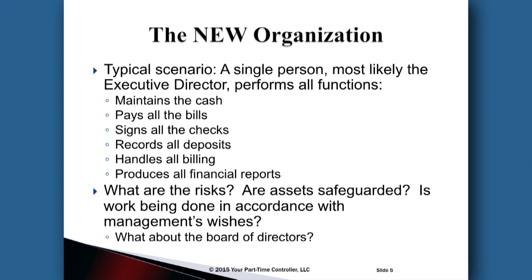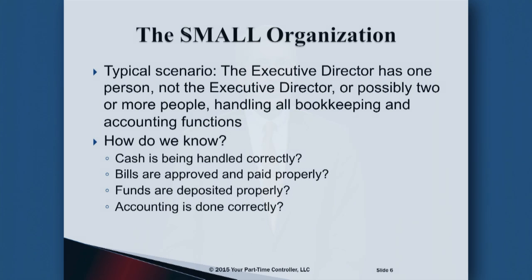As simple as the internal control structure might be, hopefully this organization gets more funding, has more revenue, and evolves into a small organization. The executive director decides they have other important things to do — fundraise, run programs — so they hire a bookkeeper. Now the executive director is one step removed from all the basic processes. Somebody else is handling the cash, paying the bills, depositing the money, doing the accounting, and preparing financial reports. The executive director and board now have an added layer of internal controls needed to ensure these things are being done correctly and appropriately.